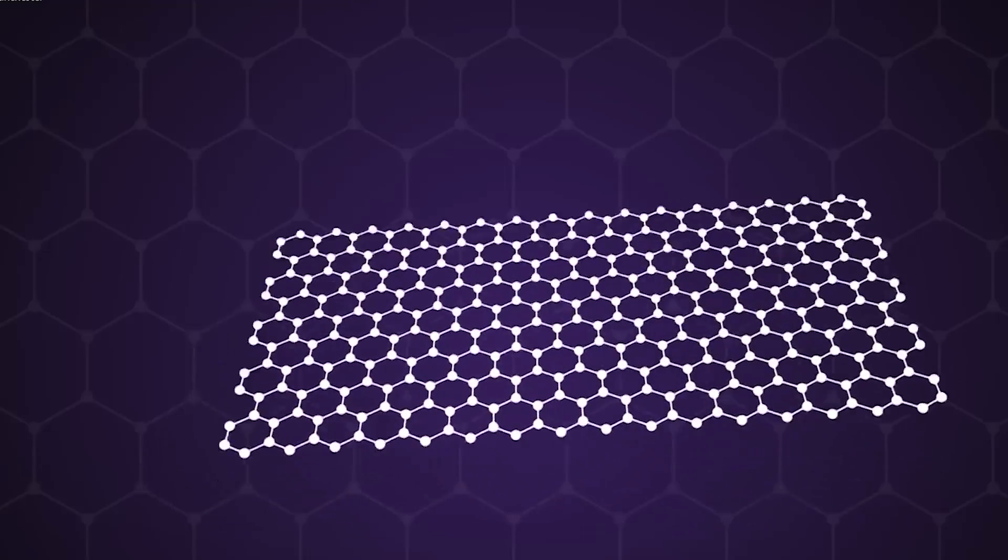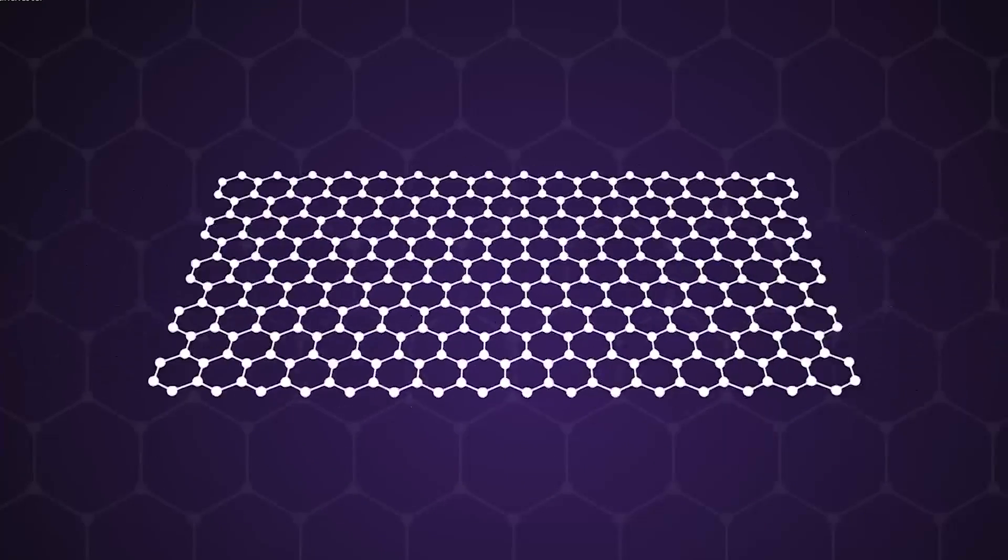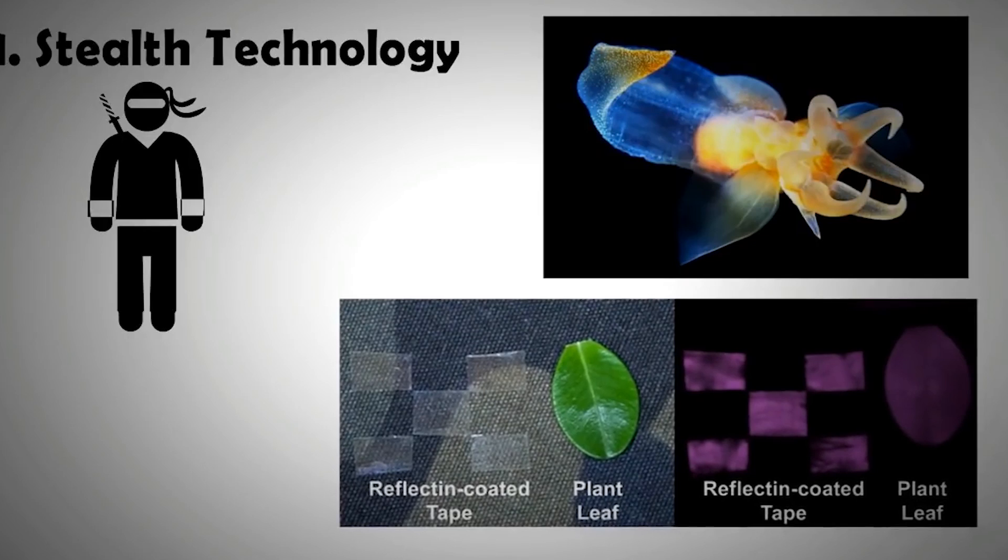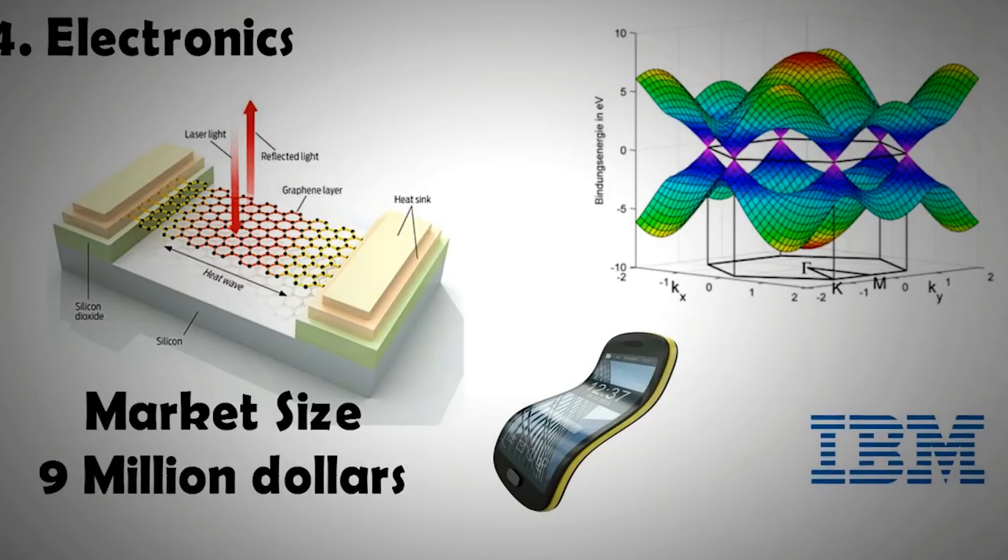But graphene is truly one of those technologies to get excited about. It's 200 times stronger than steel. It's the thinnest material on earth. It's extremely conductive, transparent, and it's even won a Nobel Prize.